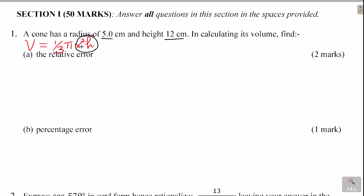What is happening to radius? Radius is squared, so radius is multiplied by itself — radius times radius — then we have the height. The best method to calculate the relative error is to get the sum of the relative errors in each of the measurements being multiplied: radius times radius, and the height.